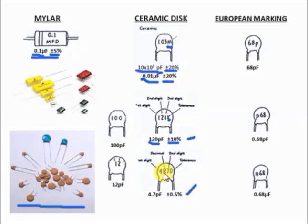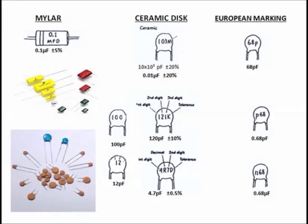For '4R7D': the 'R' means decimal point, so that is equivalent to 4.7 picofarad. The 'D' is the tolerance; from the table, letter D is plus or minus 0.5%.